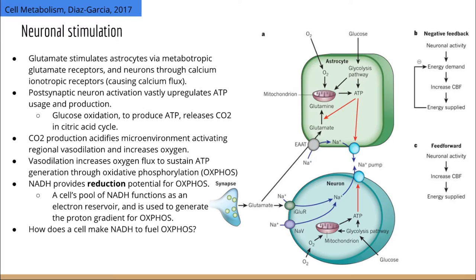When a postsynaptic neuron releases glutamate it stimulates not just the postsynaptic neuron but also the associated astrocyte through these metabotropic glutamate receptors. Some believe that metabotropic glutamate receptor activation on astrocytes leads to the release of lactate. Ionotropic glutamate receptors are primarily located on neurons, and binding of glutamate induces channel opening, allowing selective permeabilization of calcium ions — the primary mechanism by which an excitatory action potential excites the postsynaptic neuron.